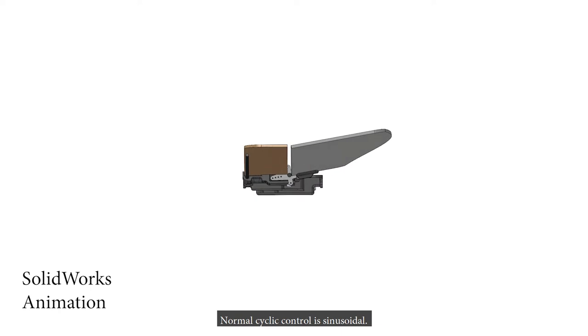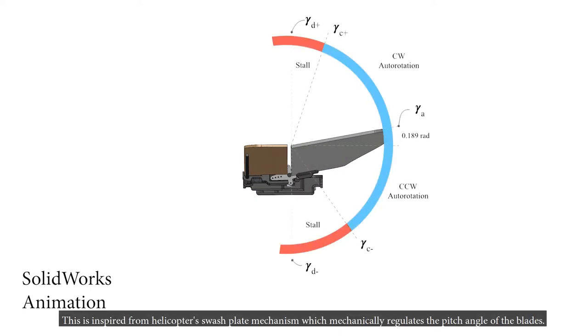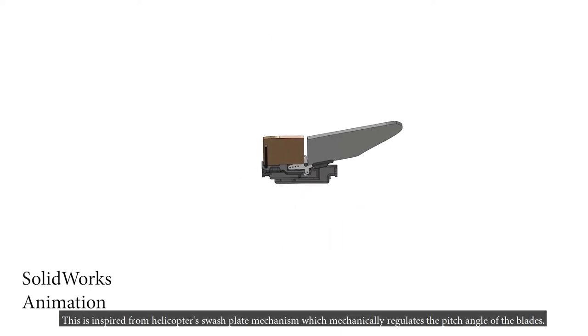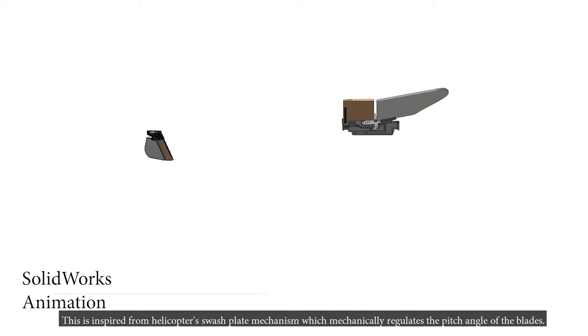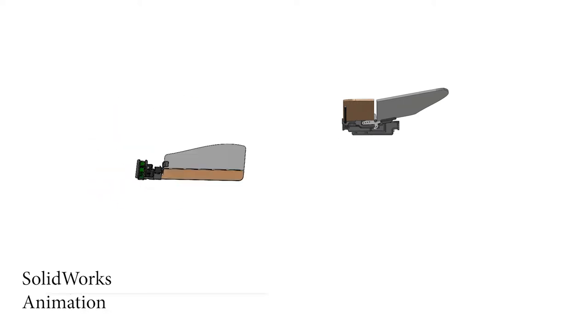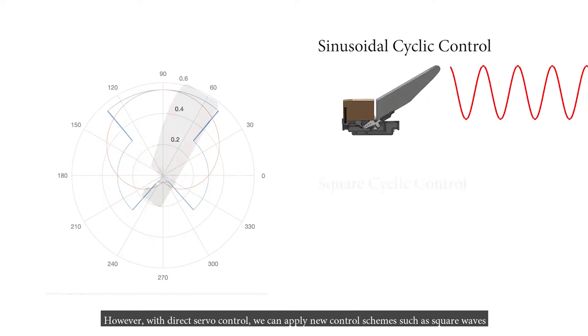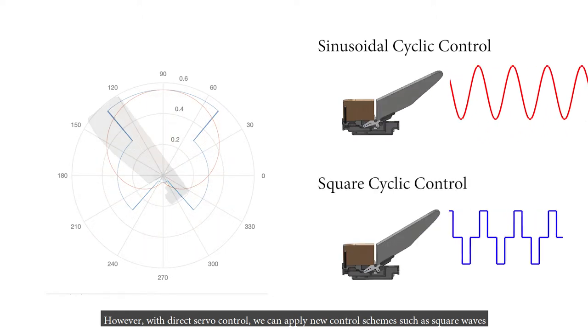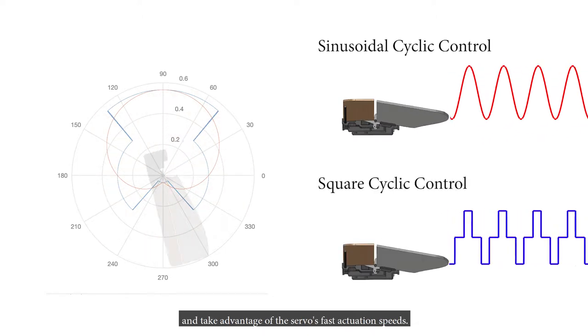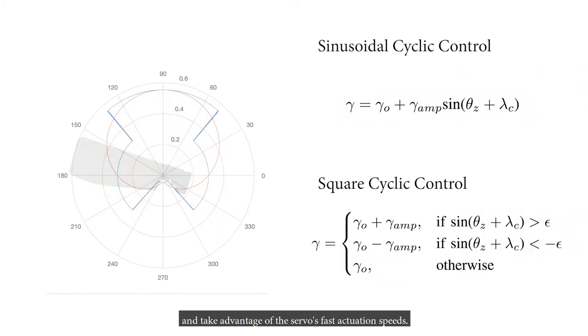Normal cyclic control is sinusoidal. This is inspired from helicopter's swashplate mechanism, which mechanically regulates the pitch angle of the blades. However, with direct servo control, we can apply new control schemes such as square waves to take advantage of the servo's fast actuation speeds.